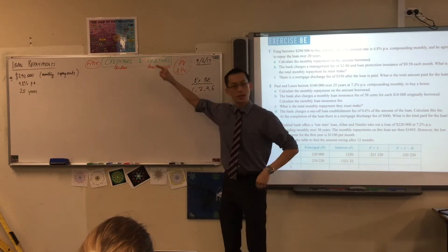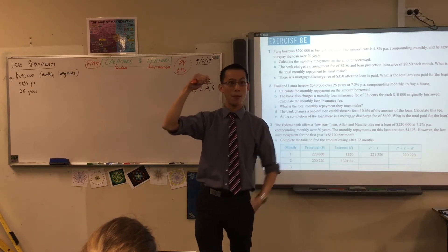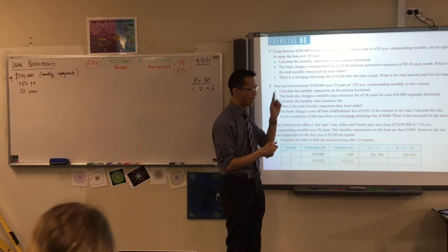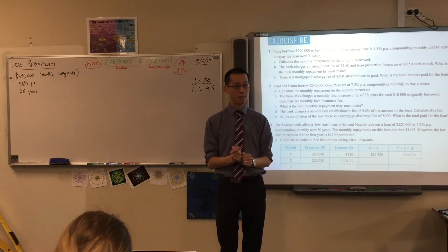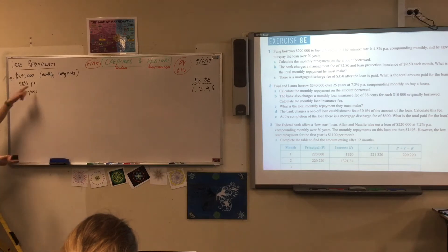So the first thing we need to do is notice that the information they've given us from the interest rate and the amount of time, both not in the format we need them to answer this question. What's wrong with them? They need to be monthly, and currently they are per annum and years. So the first thing you need to do is convert both of them.